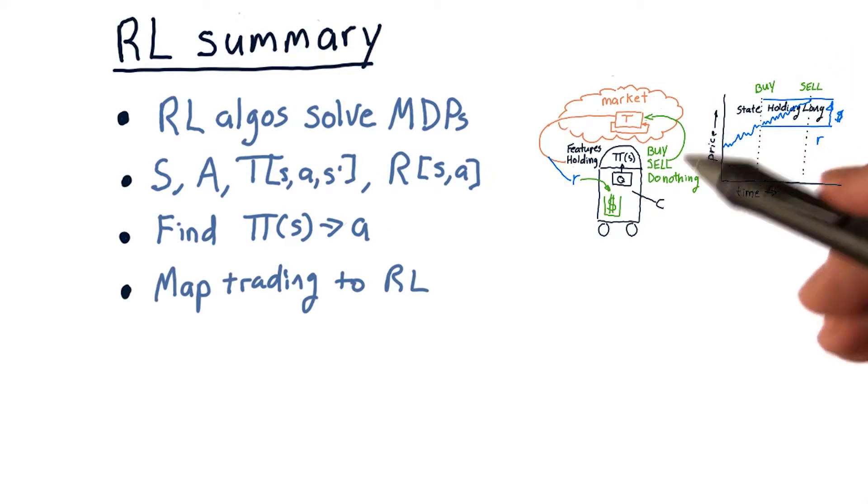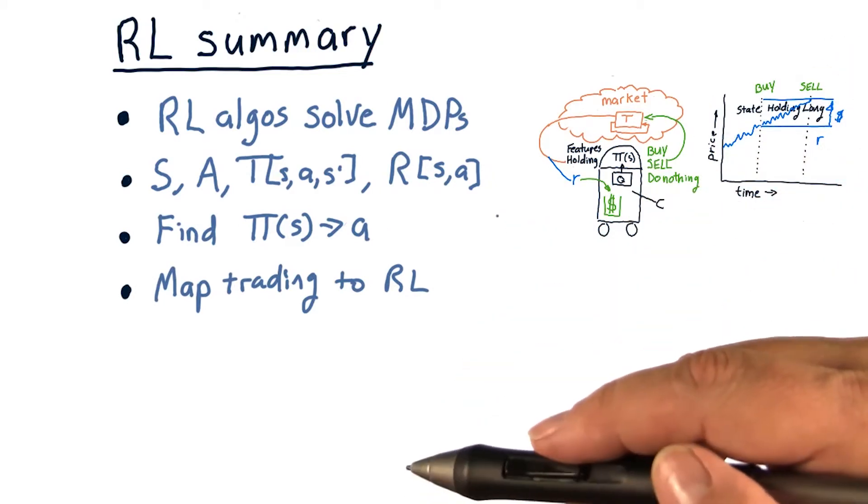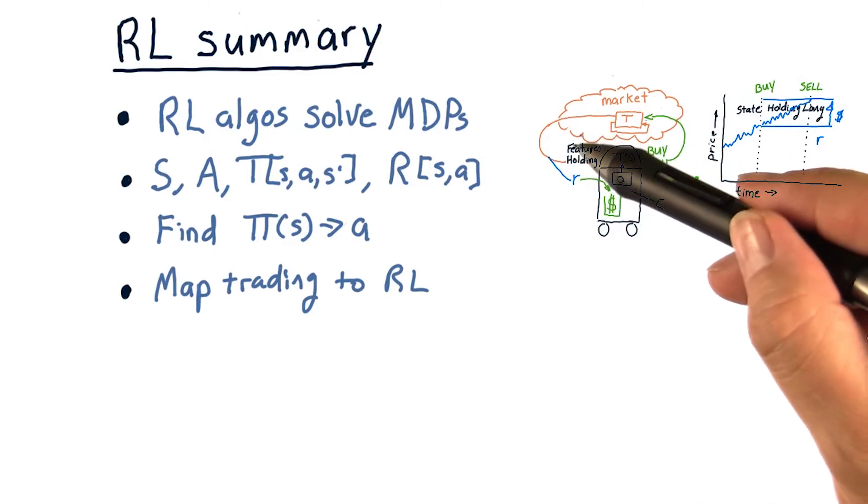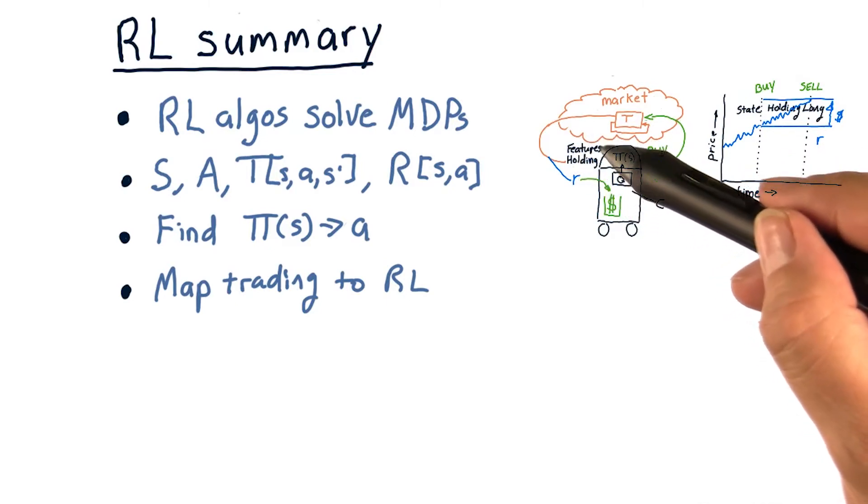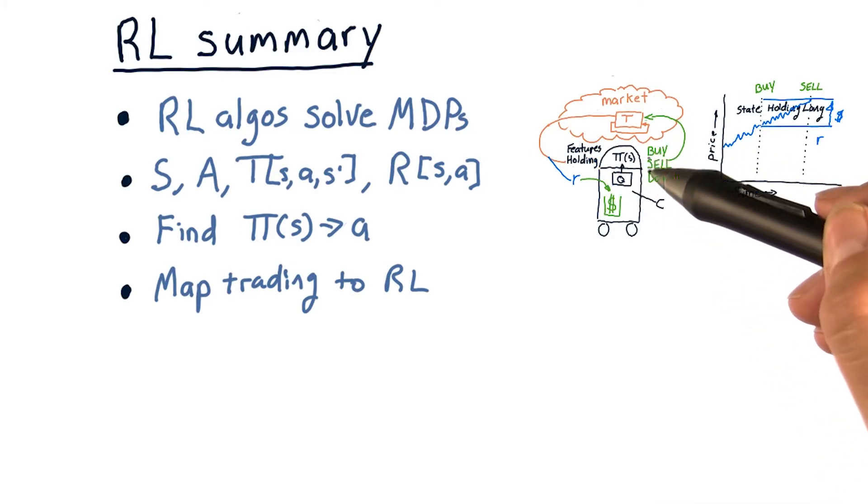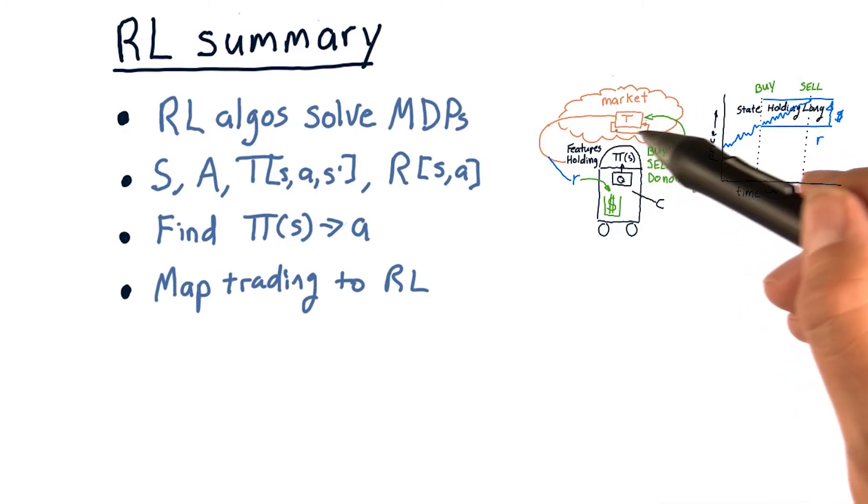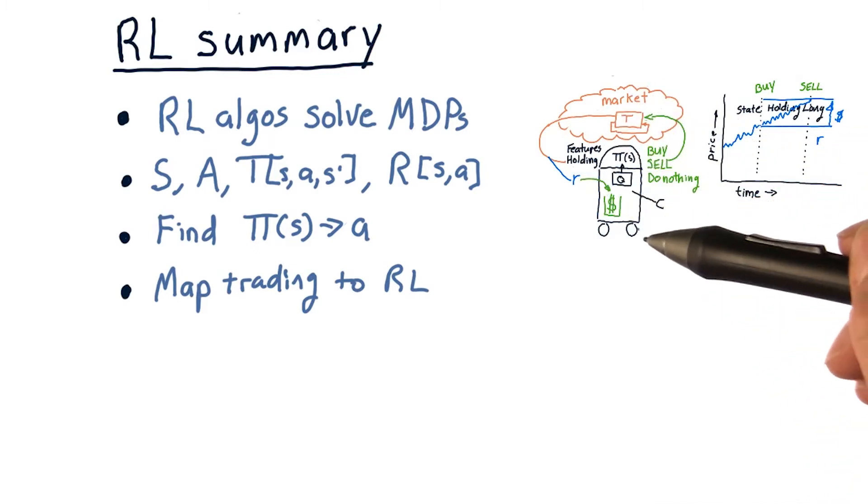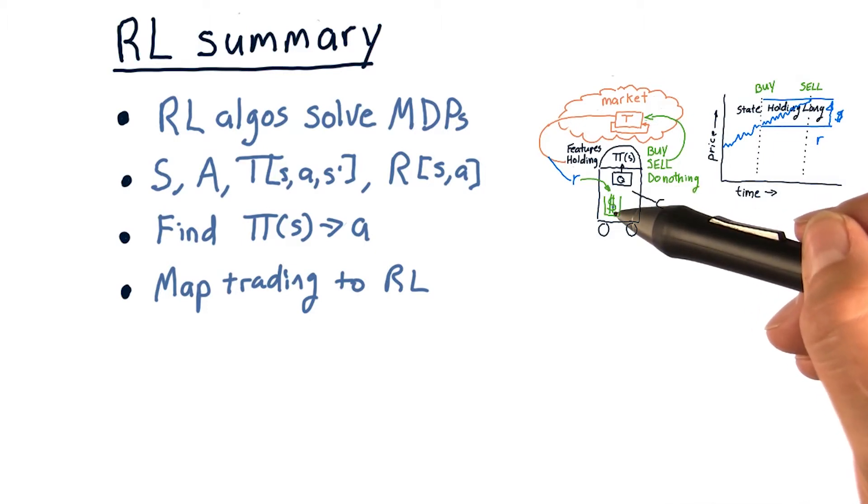We can map our task for trading to reinforcement learning. And it works out like this: S are states, features about stocks and whether or not we're holding a stock. Actions are buy, sell, or do nothing. The transition function here is the market, and finally, the reward function is how much money we get at the end of a trade.